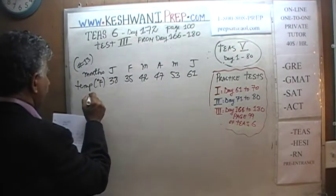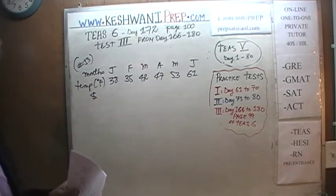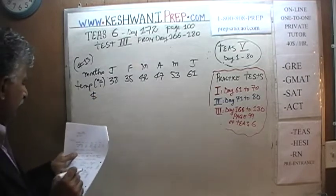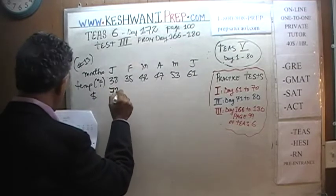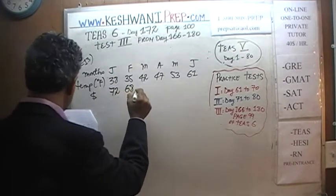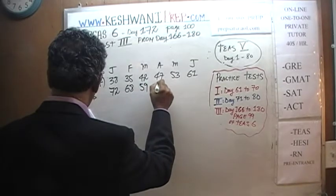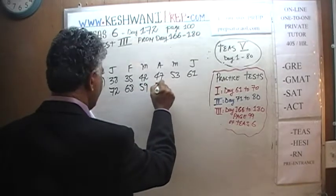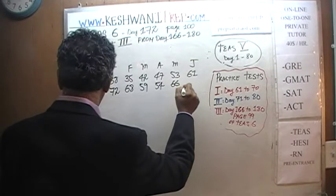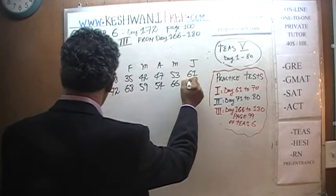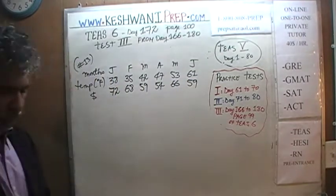And here are our heating bills that we received in the mail. In January we paid $72, February we paid $68, March was $59, April was $54, then $66 in May, and in June we paid $59.